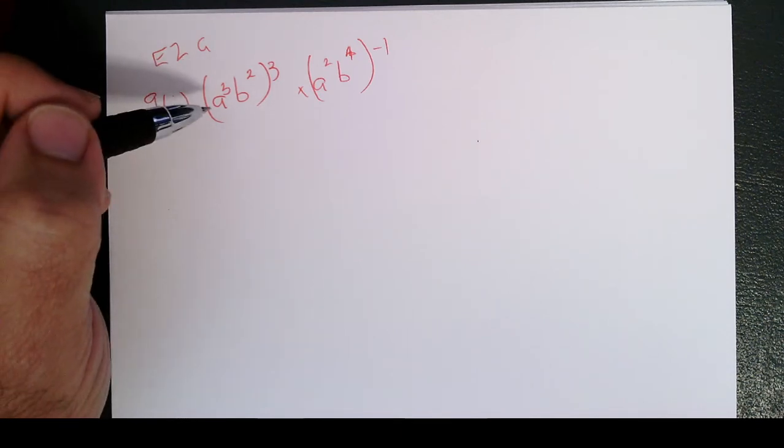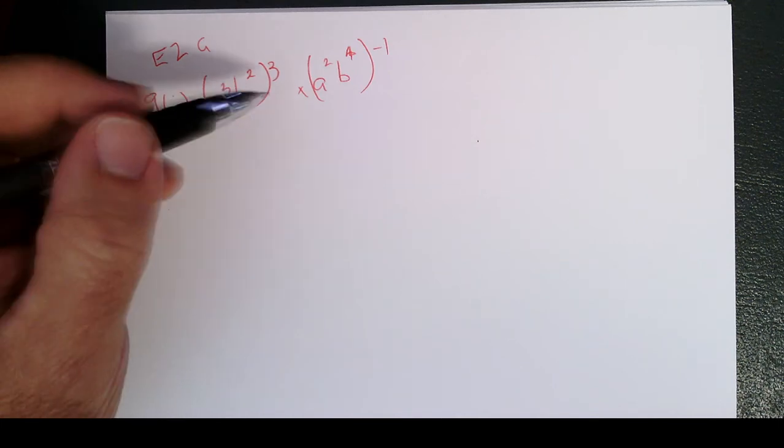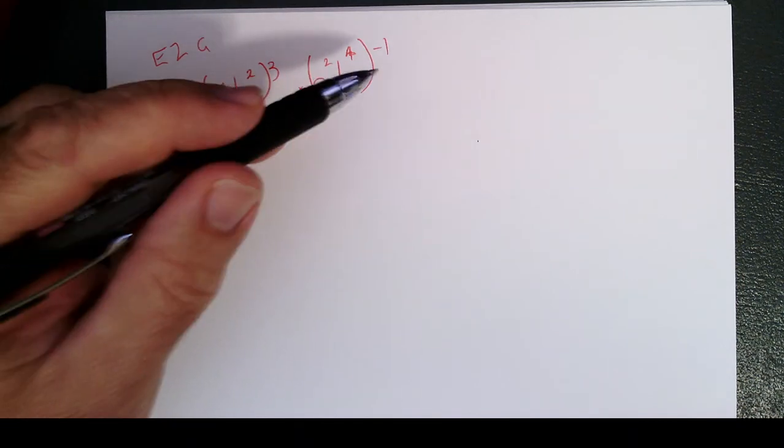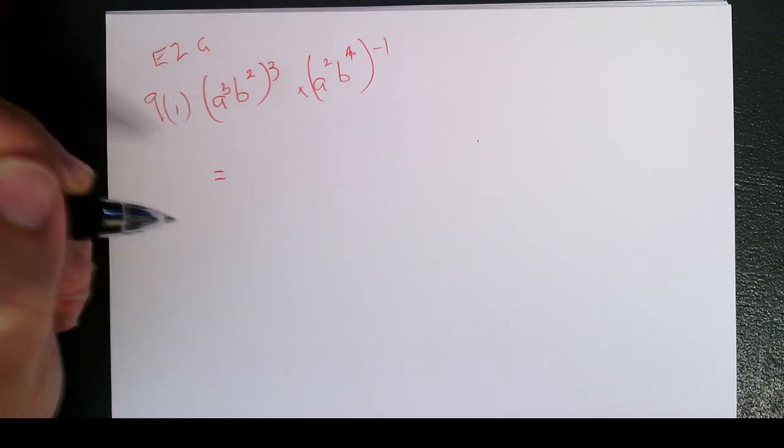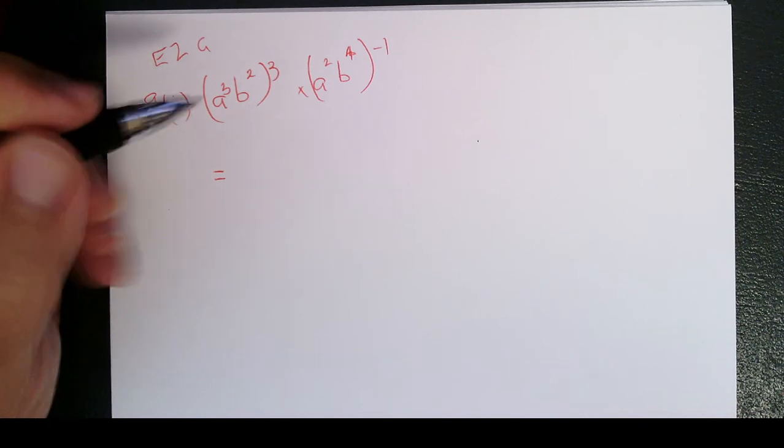We're asked to simplify a cubed b squared all to the power of 3 times a squared b to the 4 all to the power of negative 1. We're going to apply the index laws with regards to brackets and products.